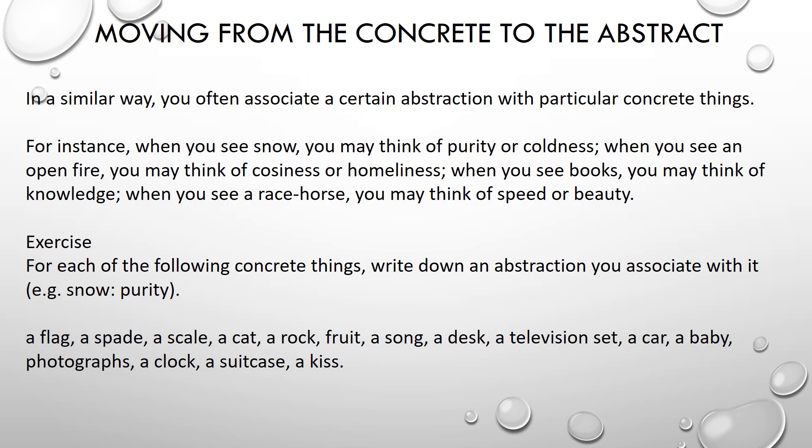Let's work the other way around. In a similar way, you often associate a certain abstraction with particular concrete things. For instance, when you see snow, you may think of purity or coldness. When you see an open fire, you may think of coziness or homeliness. When you see books, you may think of knowledge. When you see a racehorse, you may think of speed or beauty. For this exercise, choose at least three of the terms below, and write down an abstraction you associate with it. For instance, snow could be associated with the abstract idea of purity.